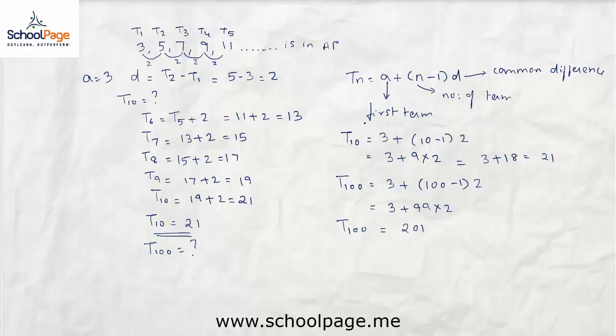So by using the formula tn equals a plus (n minus 1) times d, we can find the nth term of an arithmetic progression easily.